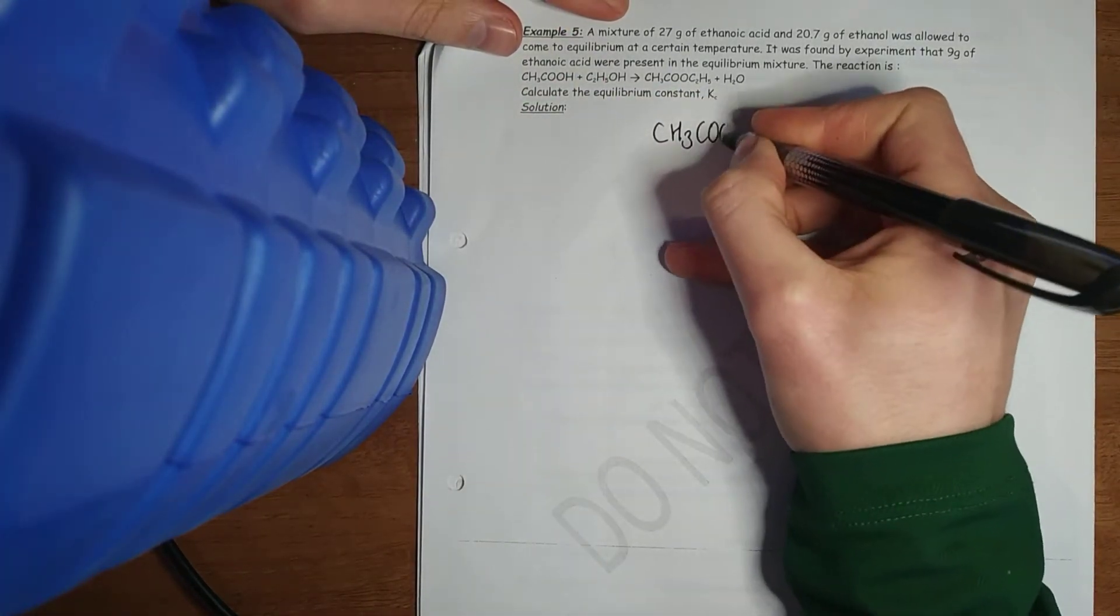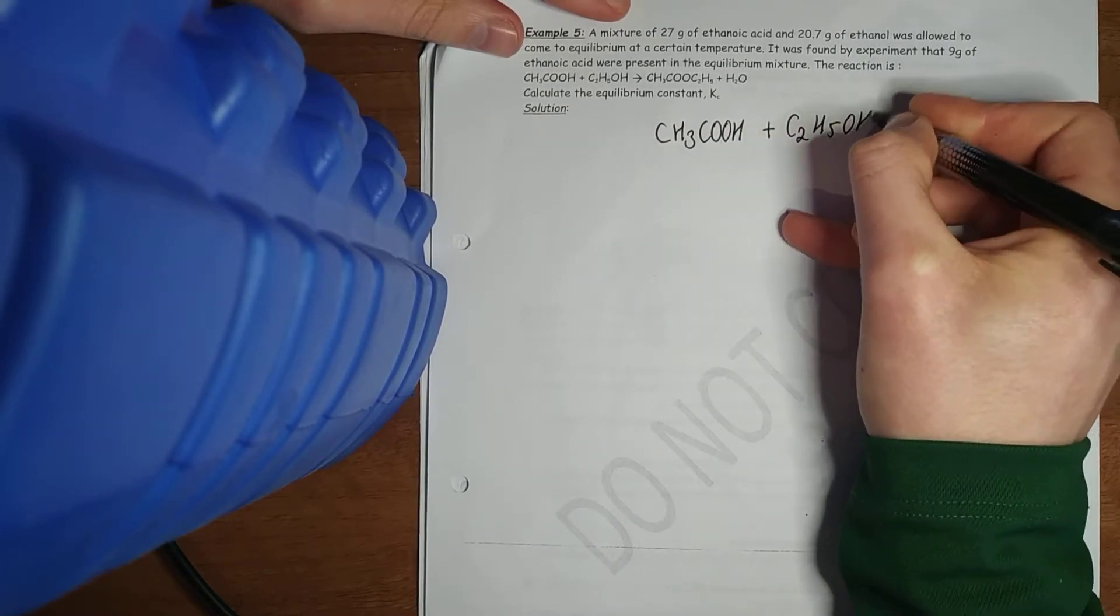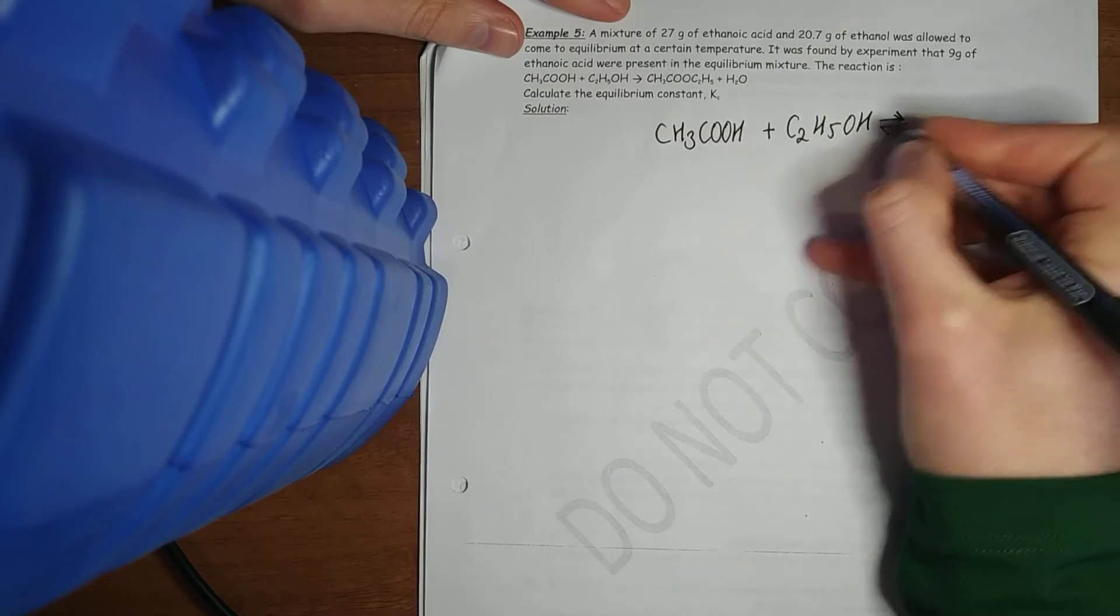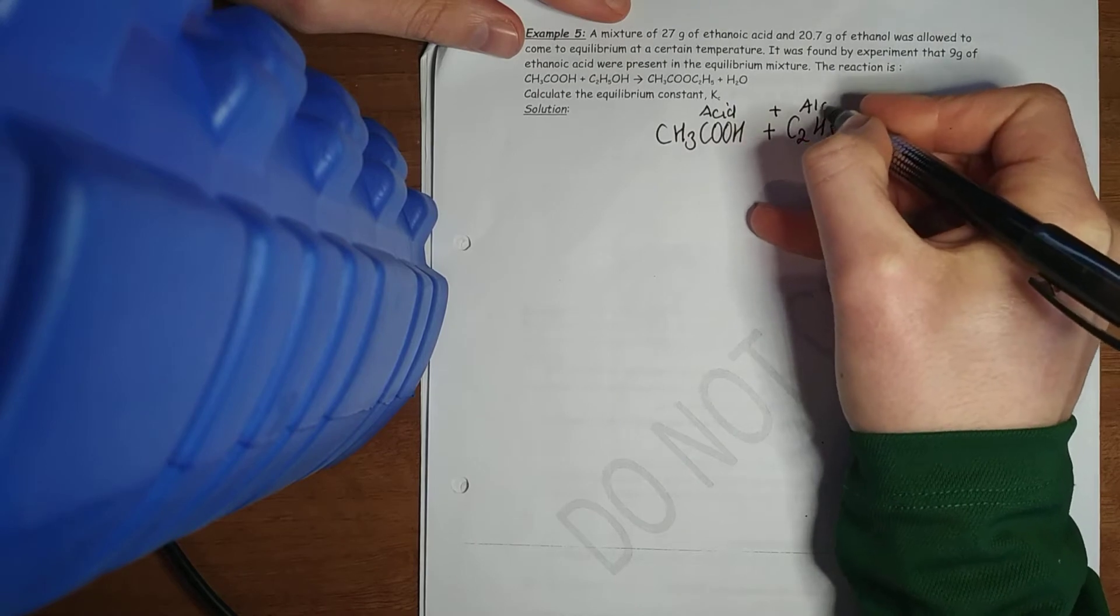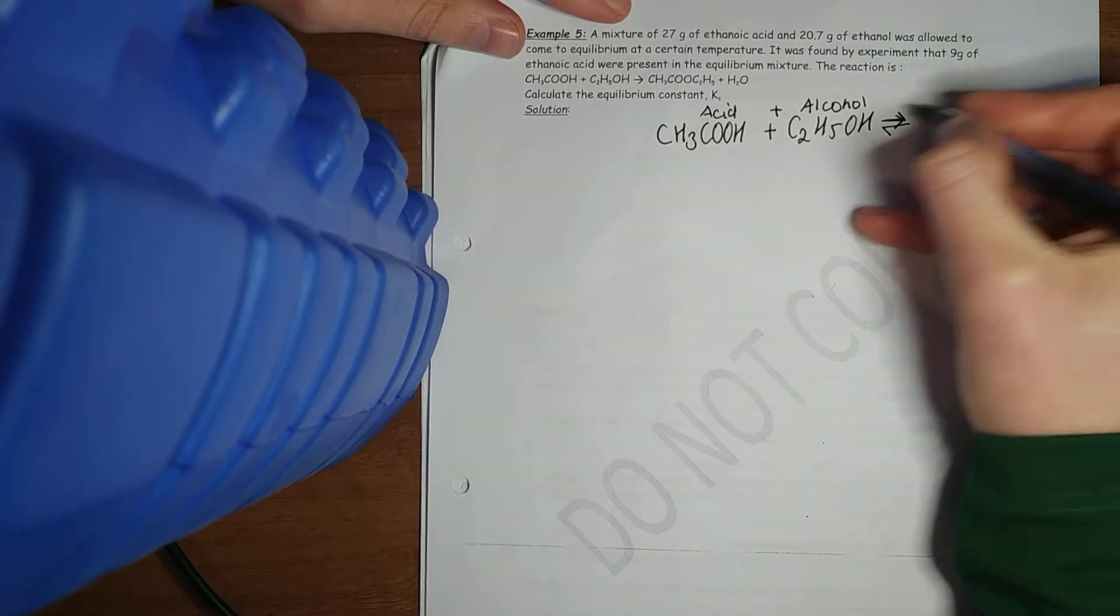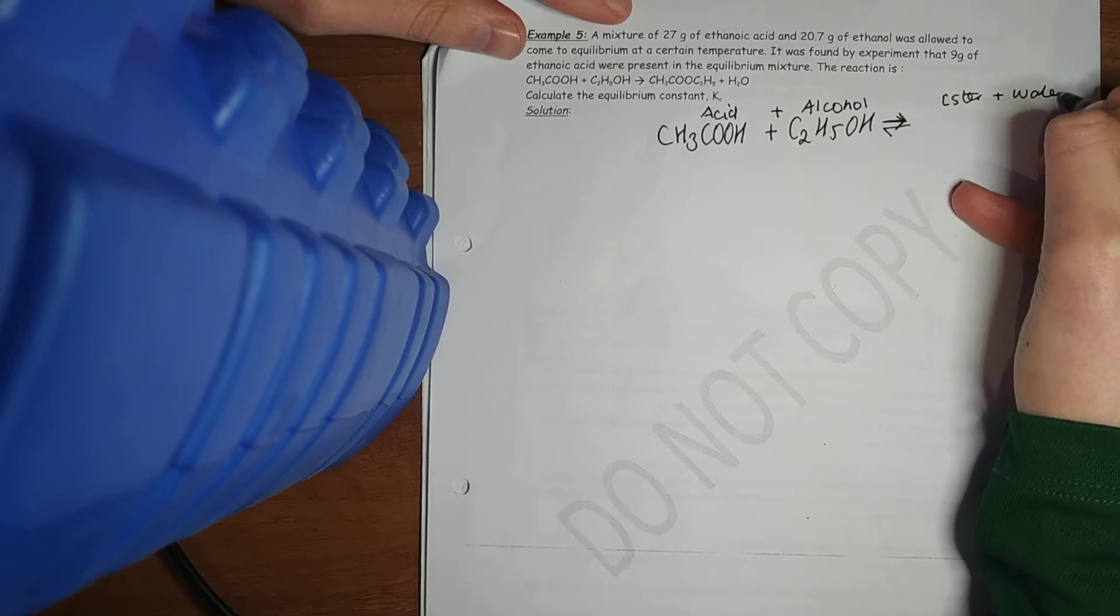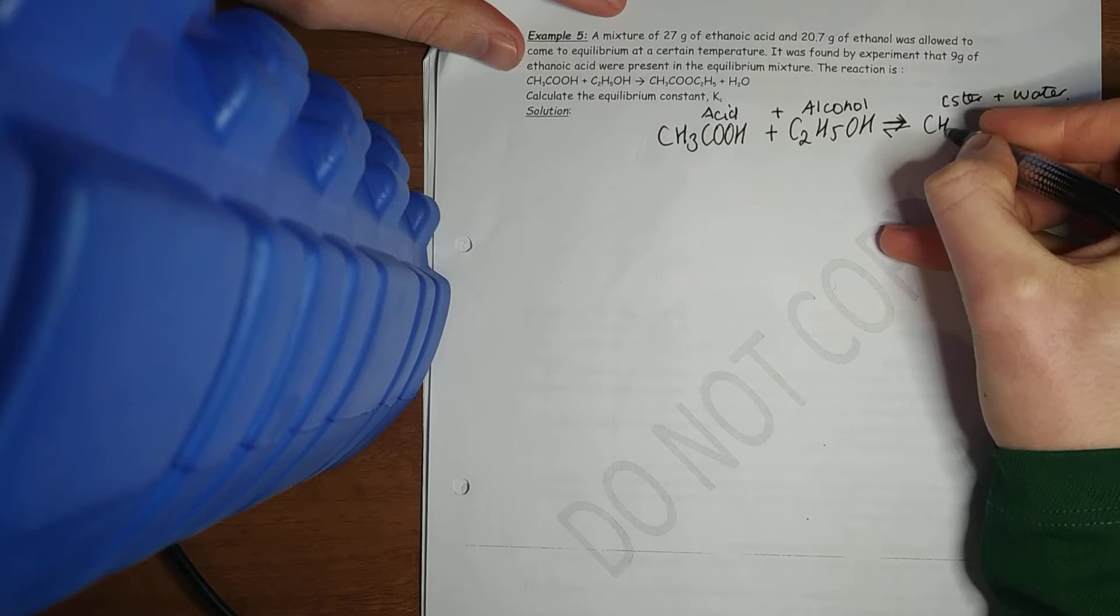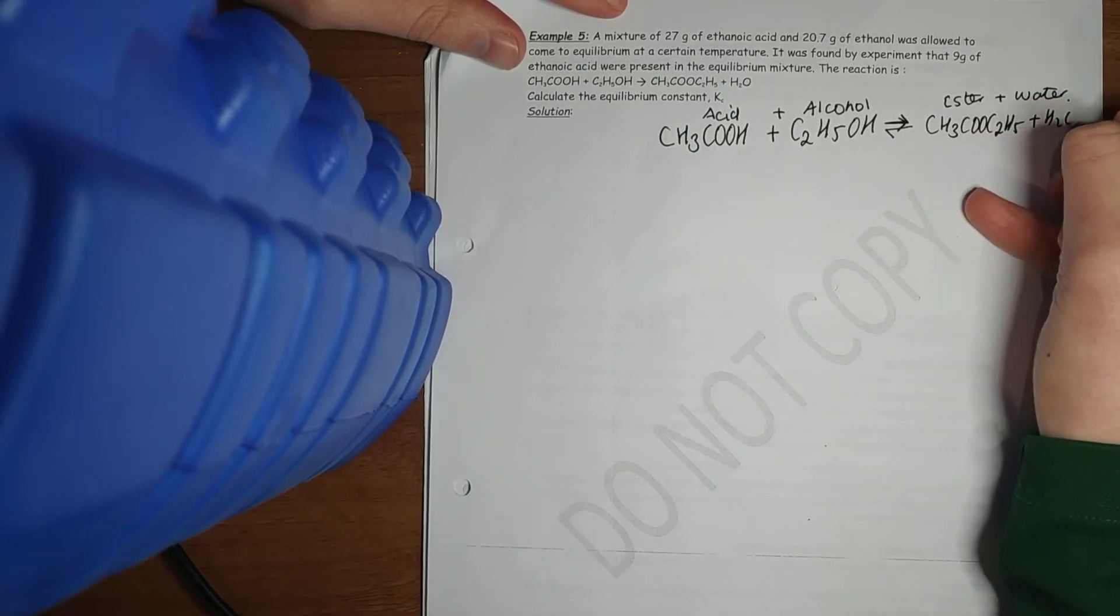So there CH3COOH, my acid and my alcohol. Sorry, my reversible reaction arrow. Acid and alcohol. What are my two products there? Acid and alcohol gives me my ester and water. Esterification, a condensation reaction. CH3COOC2H5 plus H2O.